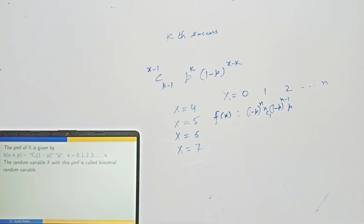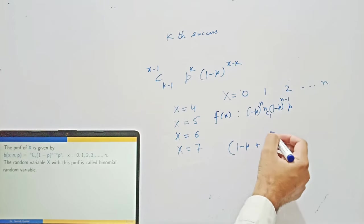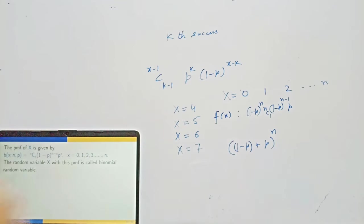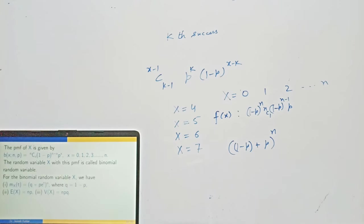These are successive terms in the binomial expansion of (Q + P)^n. The probabilities are distributed like the terms in the expansion of this binomial expression. That is why it is called binomial distribution.